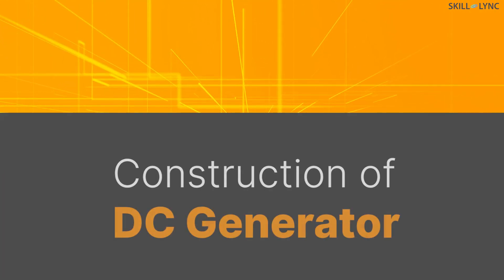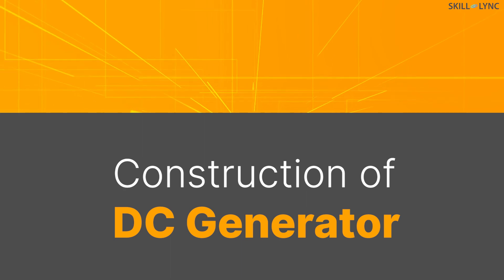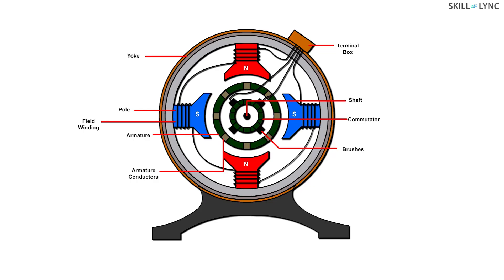Before learning the working of a DC generator, let us understand its construction. The outer curved structure that you see is called the yoke of the DC generator. It provides mechanical support to the structure as well as houses the field windings.